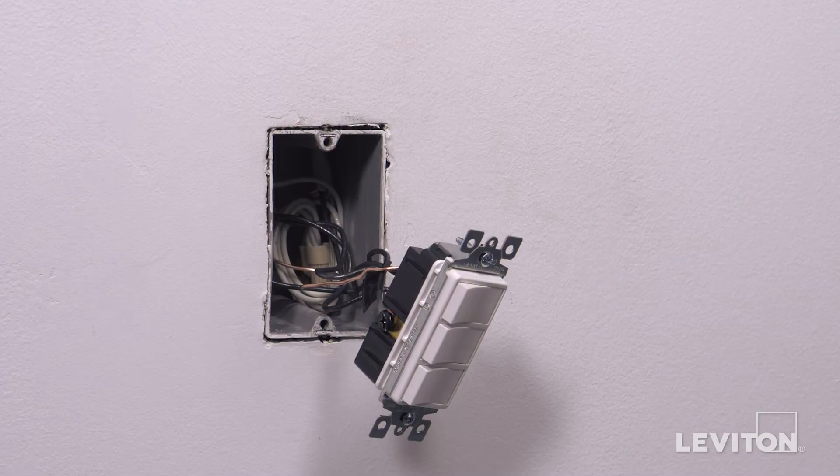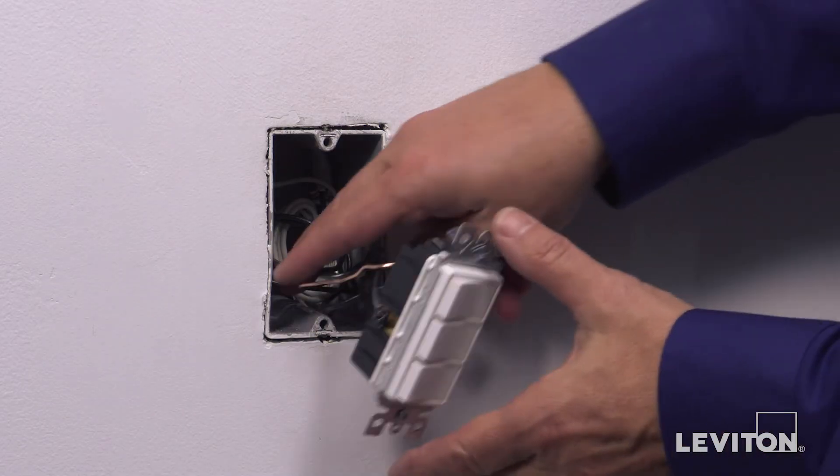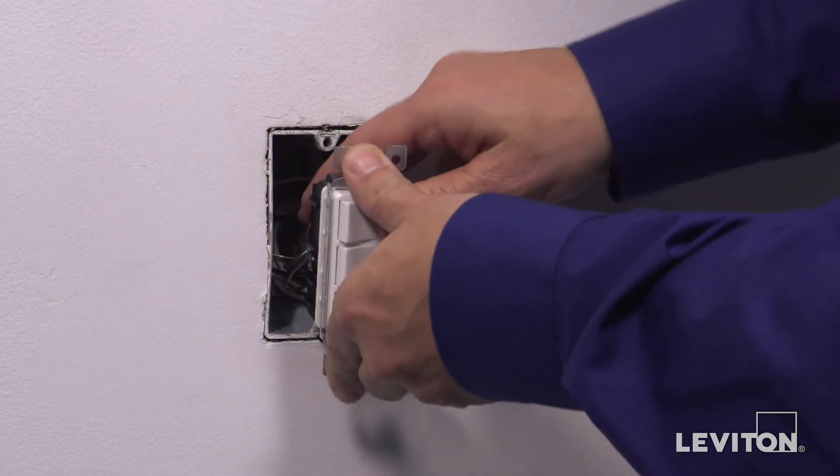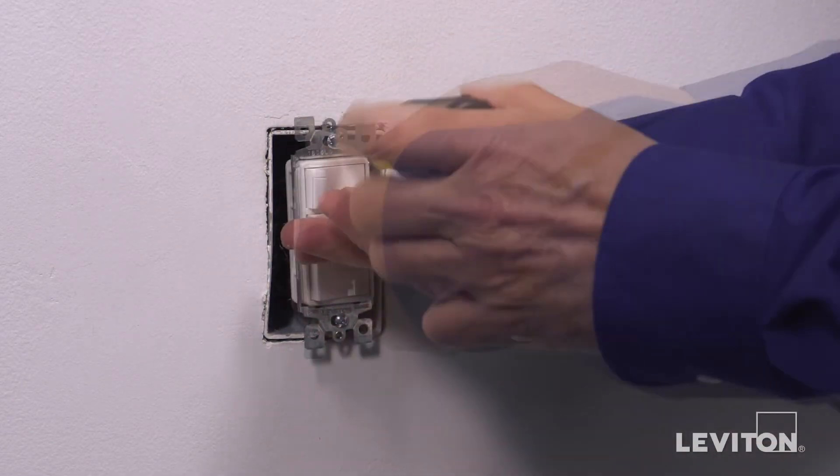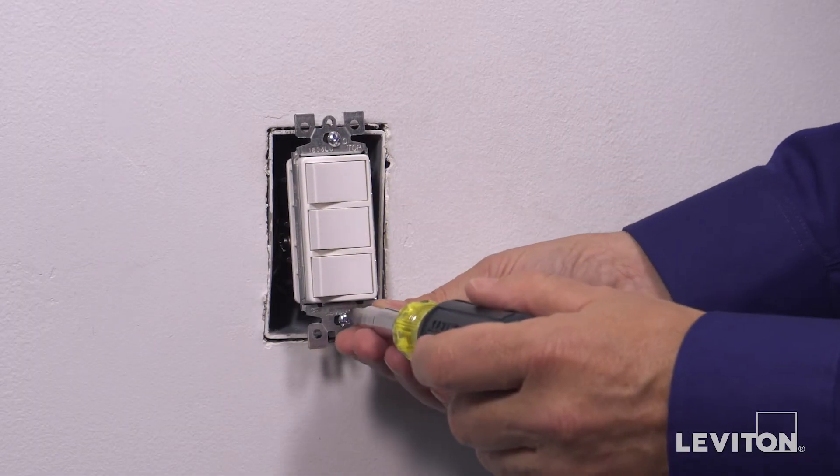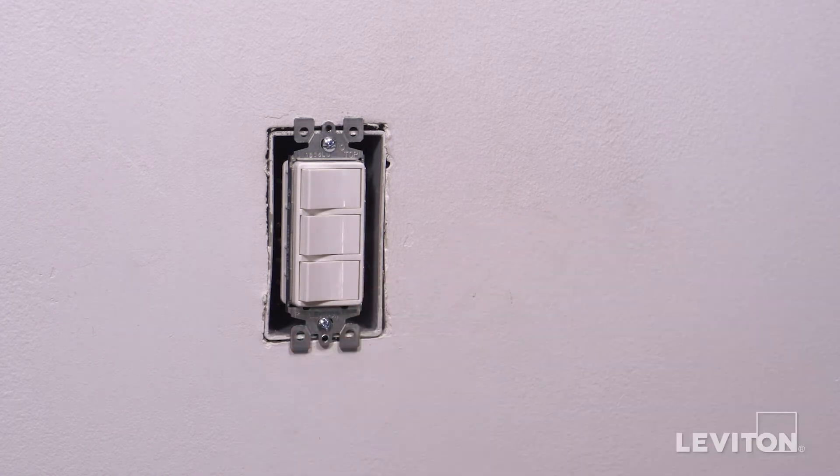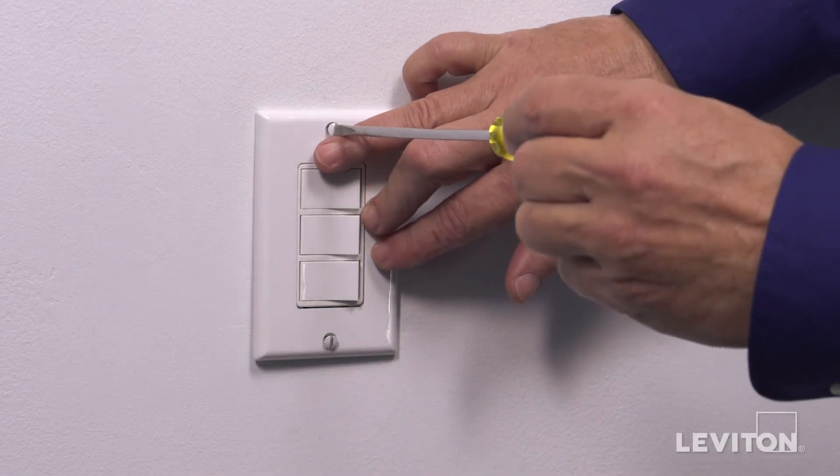The device is now terminated. Carefully position all wires to provide room in the wall box for the device. Mount the device in the wall box with the mounting screws provided. Attach the wall plate.